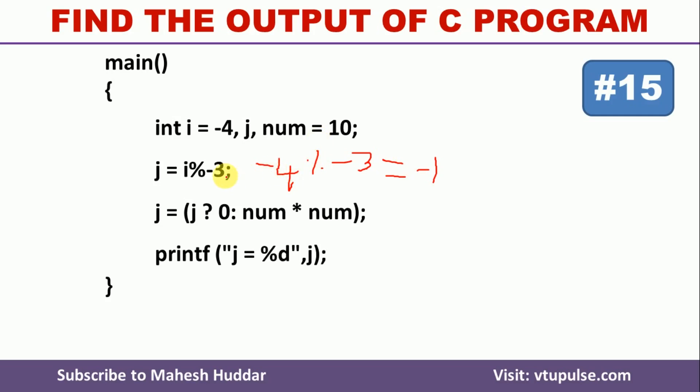So once again, whenever we have minus on a numerator and denominator with modulus operator, it should not be cancelled in this case. First, what we need to do is, without considering this particular sign, we calculate the modulus operator. Whatever the remainder we will get, the sign of the numerator will be assigned. The sign of the numerator in this case is minus.